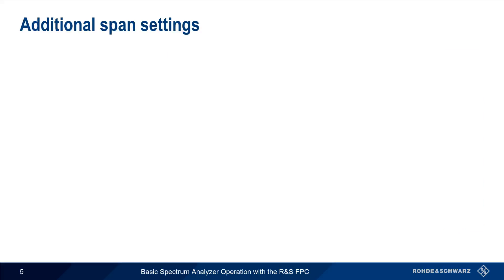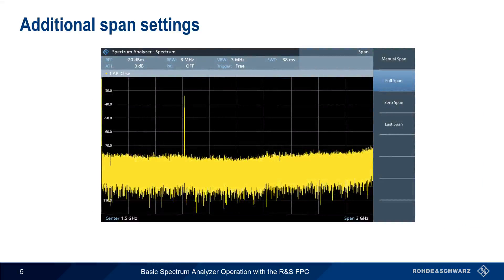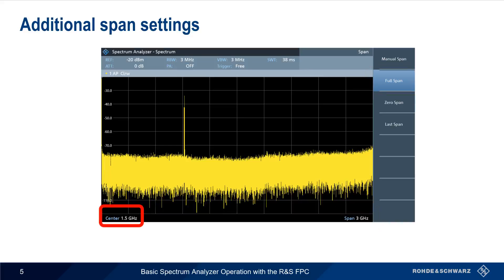Additional span settings on the FPC include full span, zero span, and last span. Full span displays the full frequency range supported by the analyzer, here 3 GHz, and the center frequency is automatically set to the center of the span. Last span simply changes the span back to its previous value — you can think of this as an undo button. Zero span is a special case where the analyzer stays on a single frequency instead of sweeping. Zero span measurements on the FPC are covered in a separate presentation.